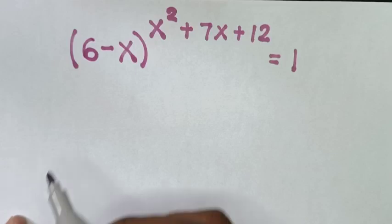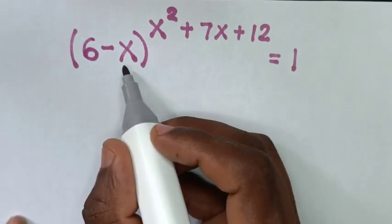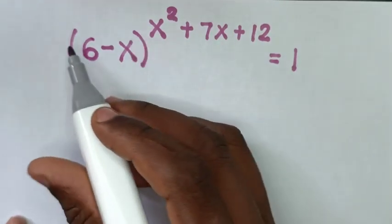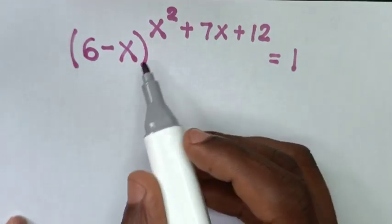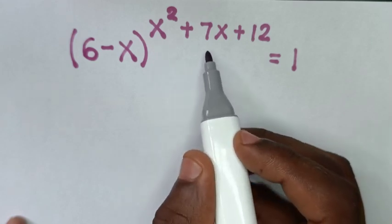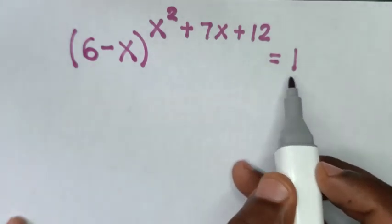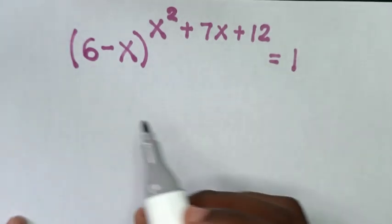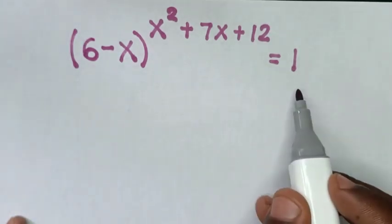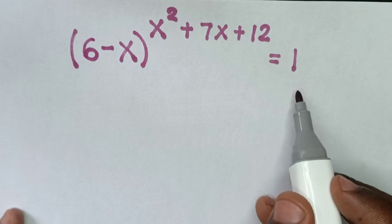Hello! Given (6 minus x) to the power of x squared plus 7x plus 12 is equal to 1. Find the values of x from this equation.